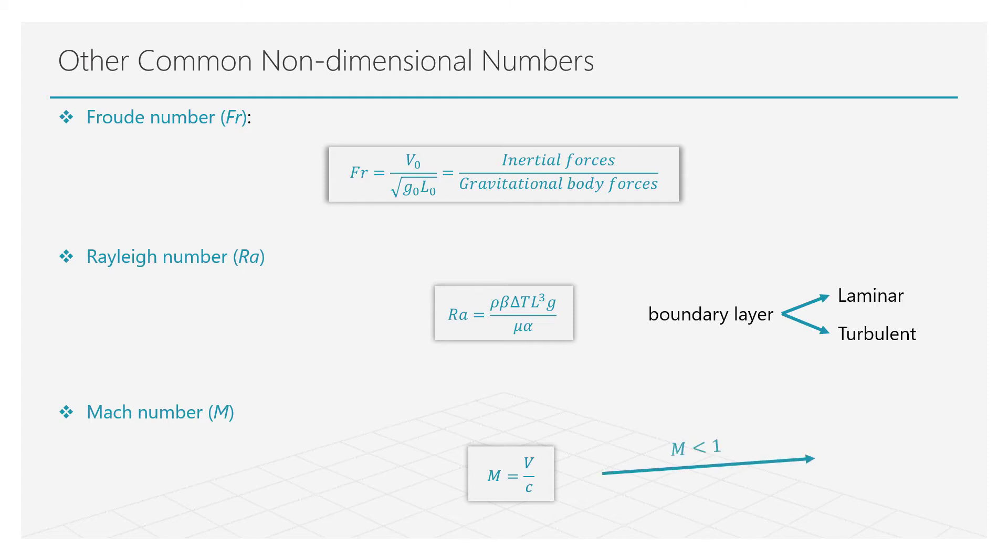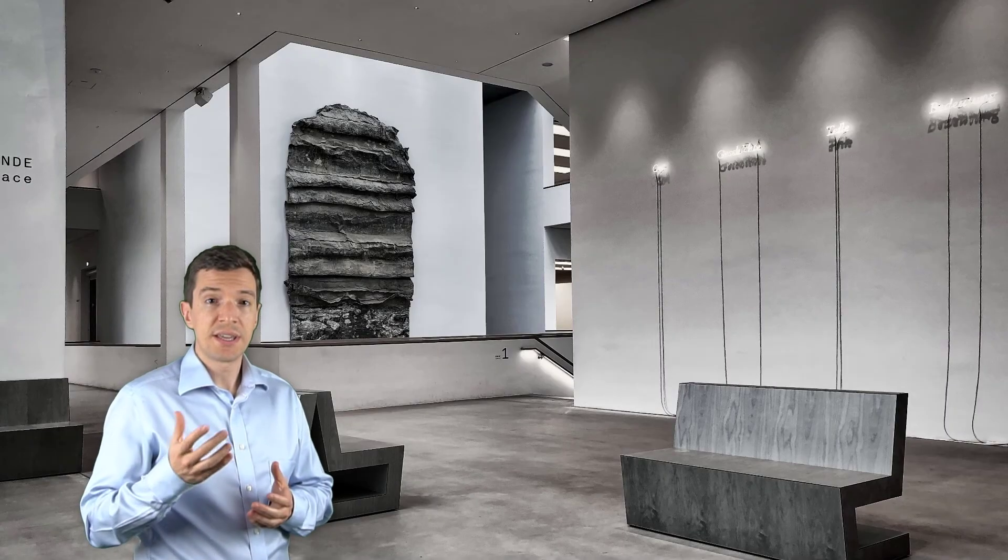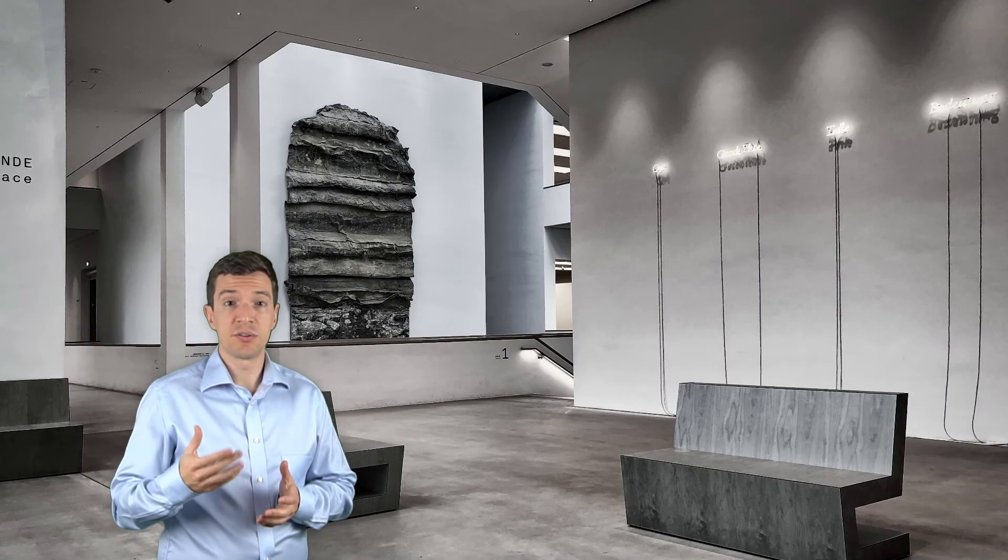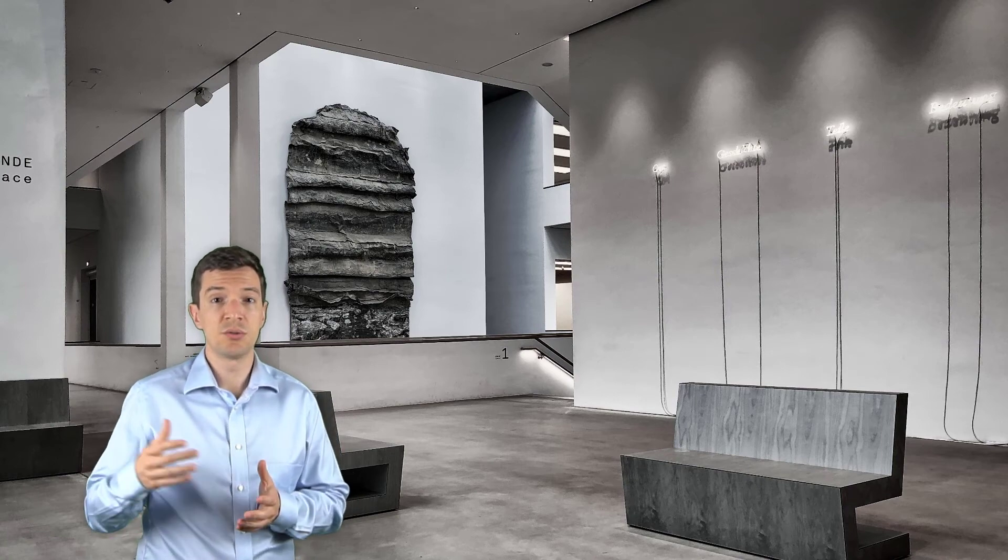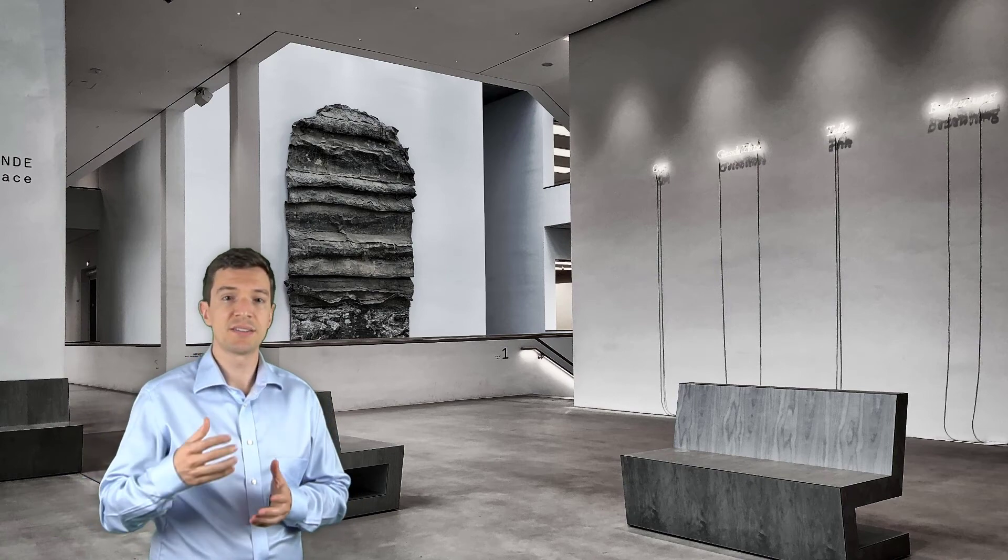If this ratio is less than 1, the flow is moving slower than the sonic speed, so subsonic speed, and if the Mach number is higher than 1, we will have a supersonic flow. More details will be given in later courses on these and other non-dimensional numbers as the need arises.